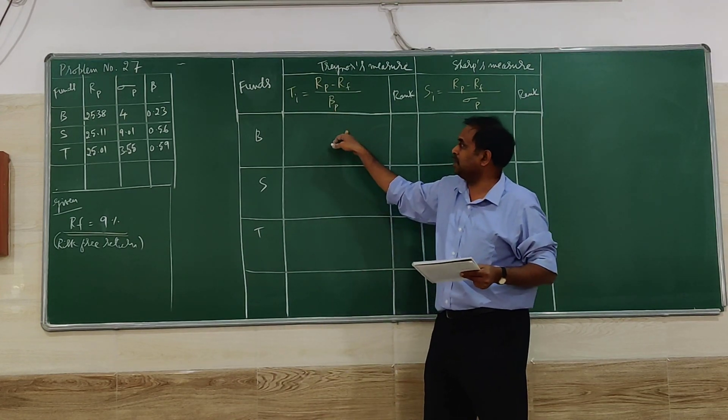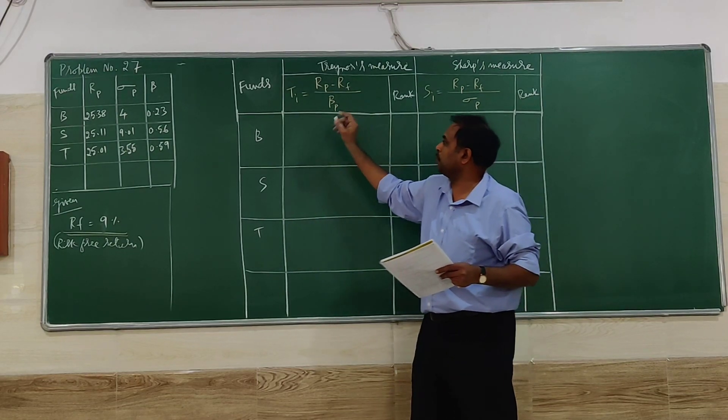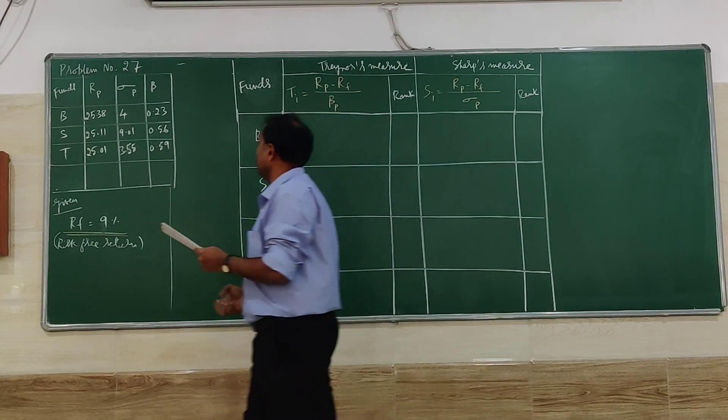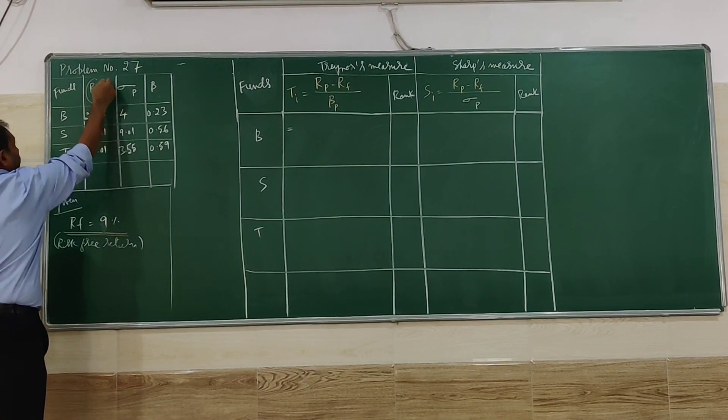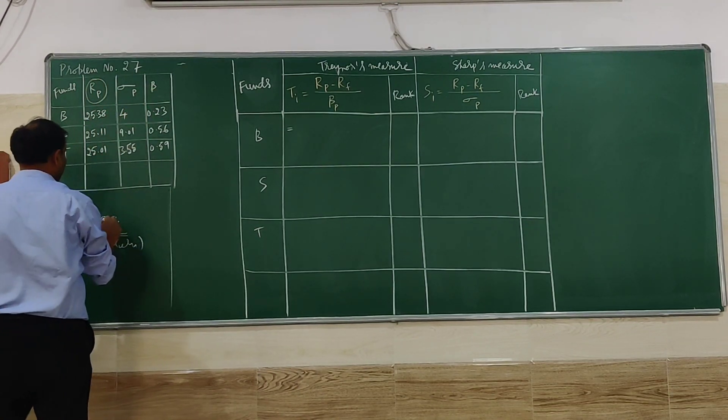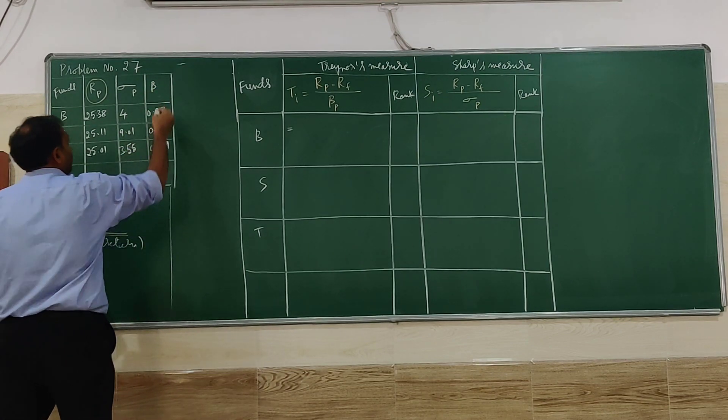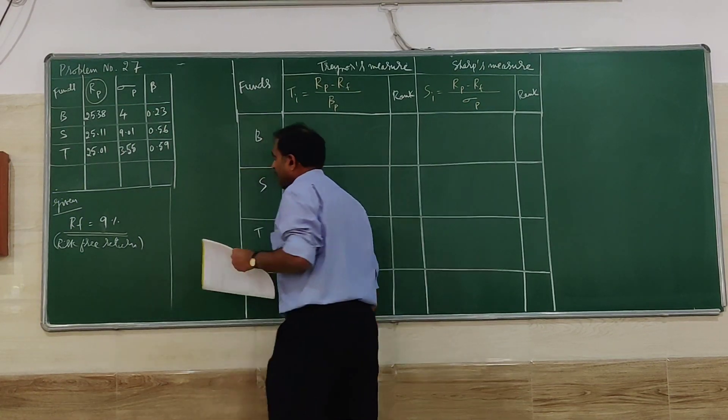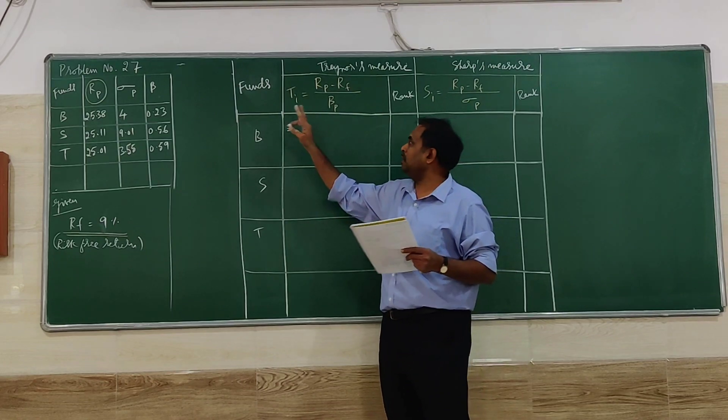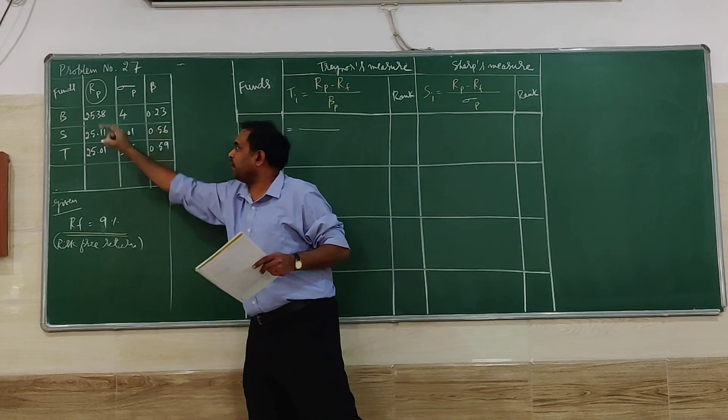Let me start with Treynor Index. I have written funds and will substitute the values. rp is clearly given, rf is here, and beta of p is the beta of individual funds. Very easy to identify - you just have to remember how to substitute carefully. For the first one, rp is 25.38.